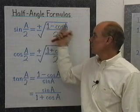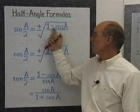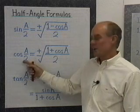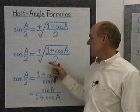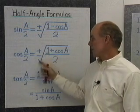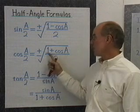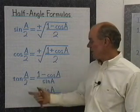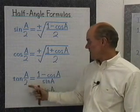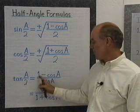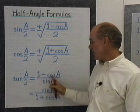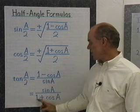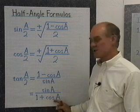The sine half-angle formula is plus or minus the square root of the quantity 1 minus cosine a, all over 2. The cosine a over 2 formula is very similar — it's plus or minus the square root of the quantity 1 plus cosine a, all over 2. Then tangent a over 2 has two forms: one where I have 1 minus cosine a over sine a, and the other is sine a over 1 plus cosine a.